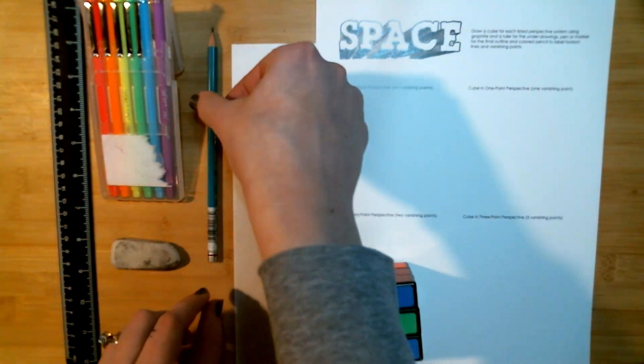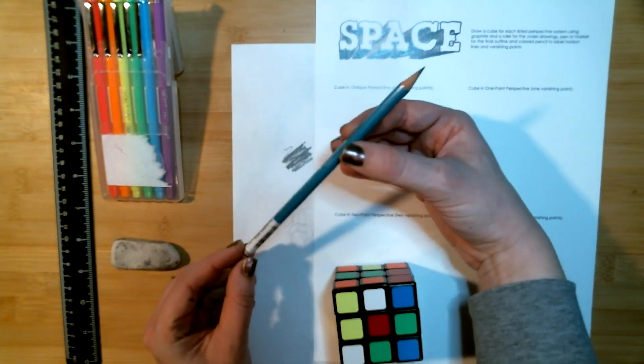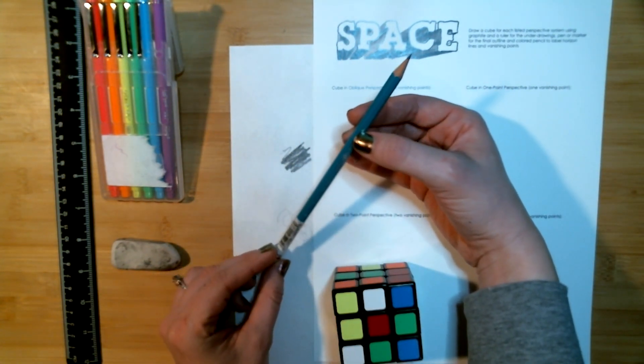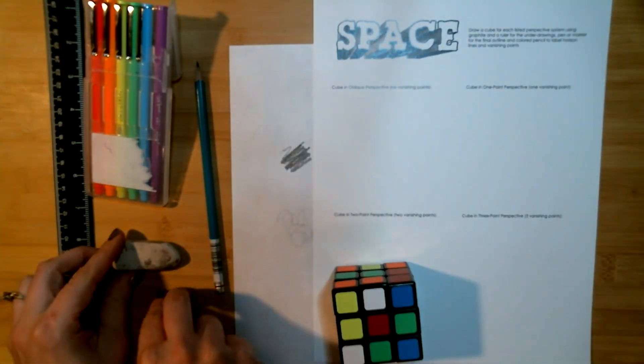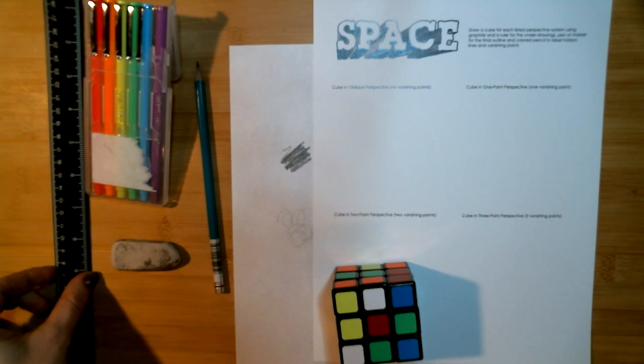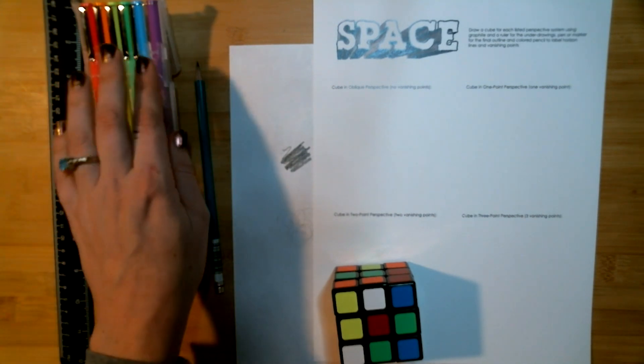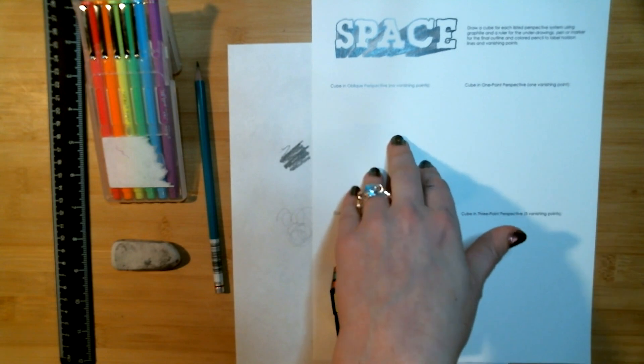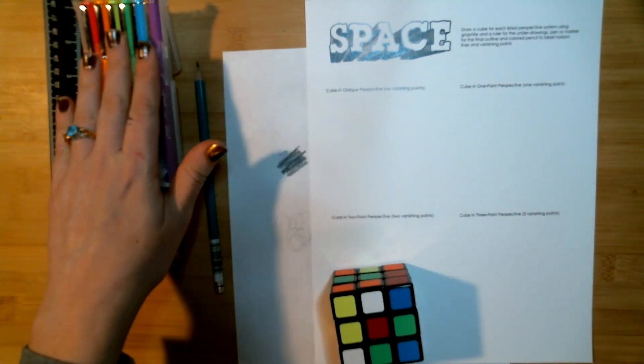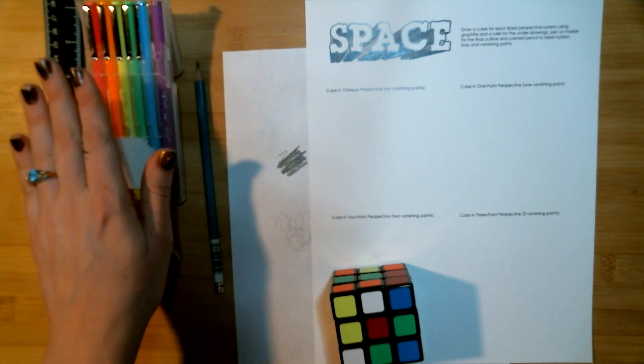So today we are going to need, you definitely will need a pencil, preferably an H pencil because this is going to be light underdrawing. You're going to need an eraser to erase any stray marks. You'll need a ruler or a straight edge of some sort and then you will need some sort of colored material.